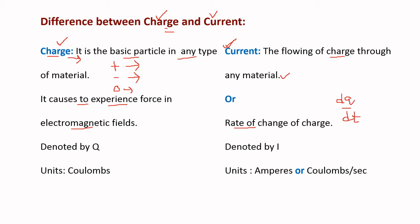Charge is denoted by the letter Q and current is denoted by the letter I. The units for charge are coulombs and the units for current are amperes, or equivalently coulombs per second. These are the basic differences between charge and current.